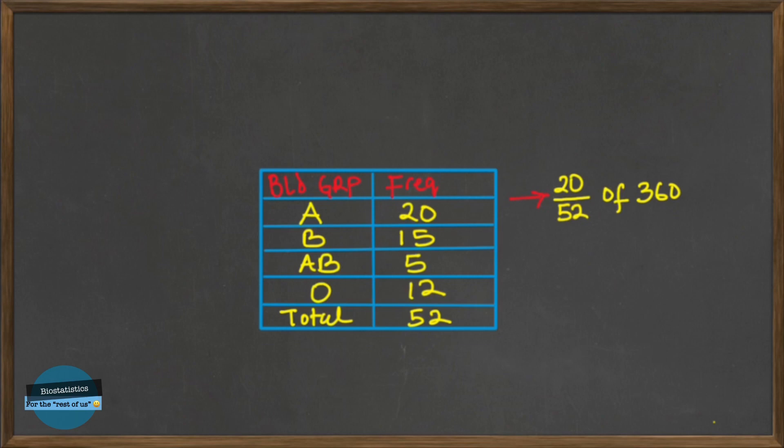And we'll use that to know the degrees. So we're going to say 20 over 52 and then we'll multiply by 360 and then we have 139 degrees approximately.